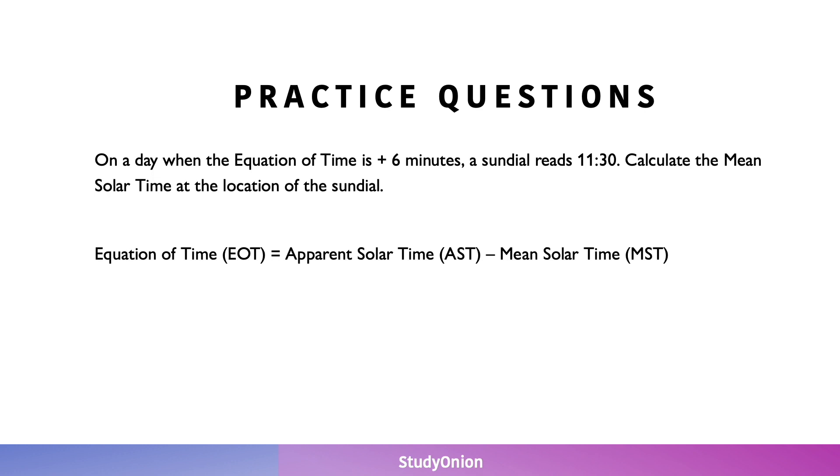Alright, I think we've calculated it. Plus 6 minutes is the equation of time, which equals 11:30, which would be the apparent solar time as it's being read on the sundial. We've rearranged that to find mean solar time. Mean solar time would then be equal to 11:30 minus 6 minutes. And if you take away 6 minutes from 11:30, your mean solar time becomes 11:24.